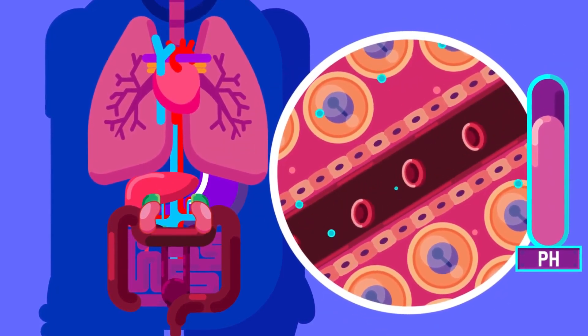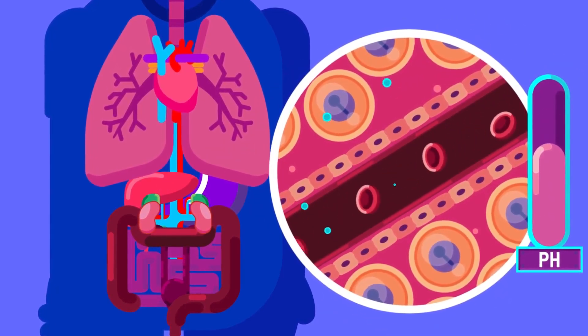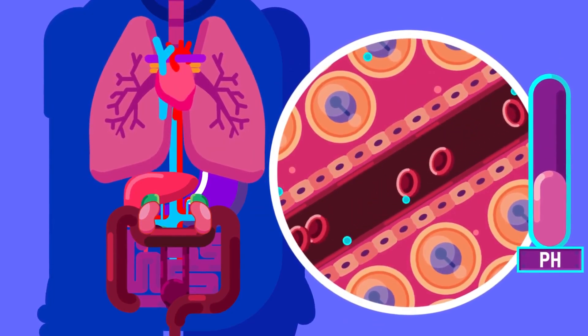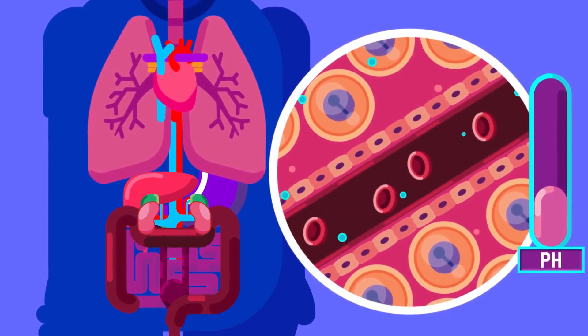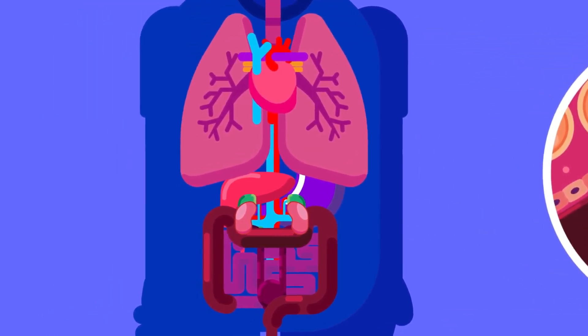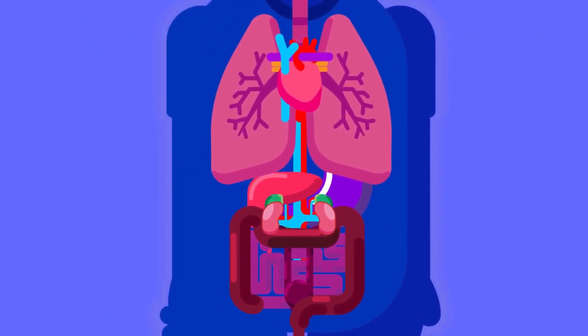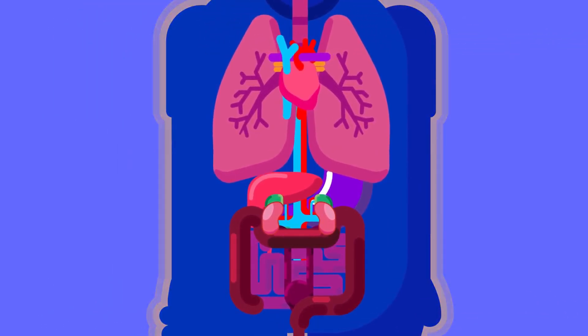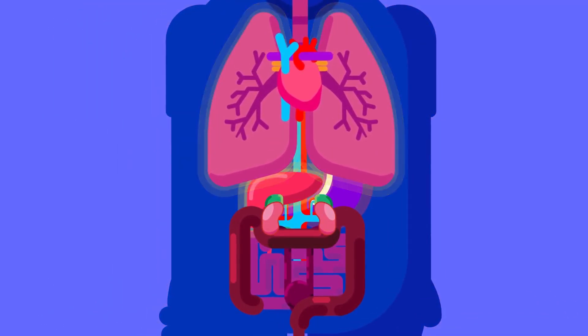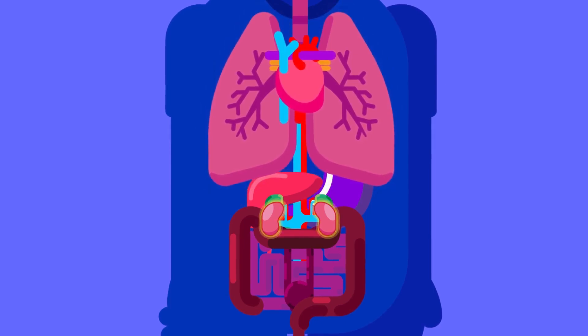The accumulation of wastes in the body interferes with the proper functioning of the cells. Excretory organs in humans are the skin, lungs, liver, and kidney.